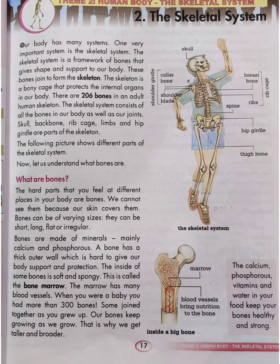Our body has many systems. One very important system is the skeletal system. The skeletal system is a framework of bones that gives shape and support to our body. These bones join to form the skeleton — a bony cage that protects the internal organs in our body. There are 206 bones in an adult human skeleton. The skeletal system consists of all the bones in our body as well as our joints.